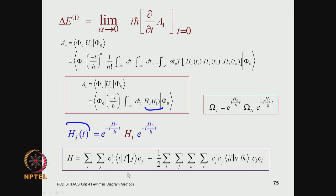We wrote the electron-electron interaction term in terms of creation and destruction operators in our earlier discussion on second quantization. In the second quantized form, the full Hamiltonian has one-electron terms and two-electron terms. The operator H1 is the difficult part — we will have to put it into our expression for a1 and then work through the second order and higher order terms. You see what a mess it really is, and this is where the Feynman diagrammatic methods become handy — those are the ones I will introduce in the next few classes.